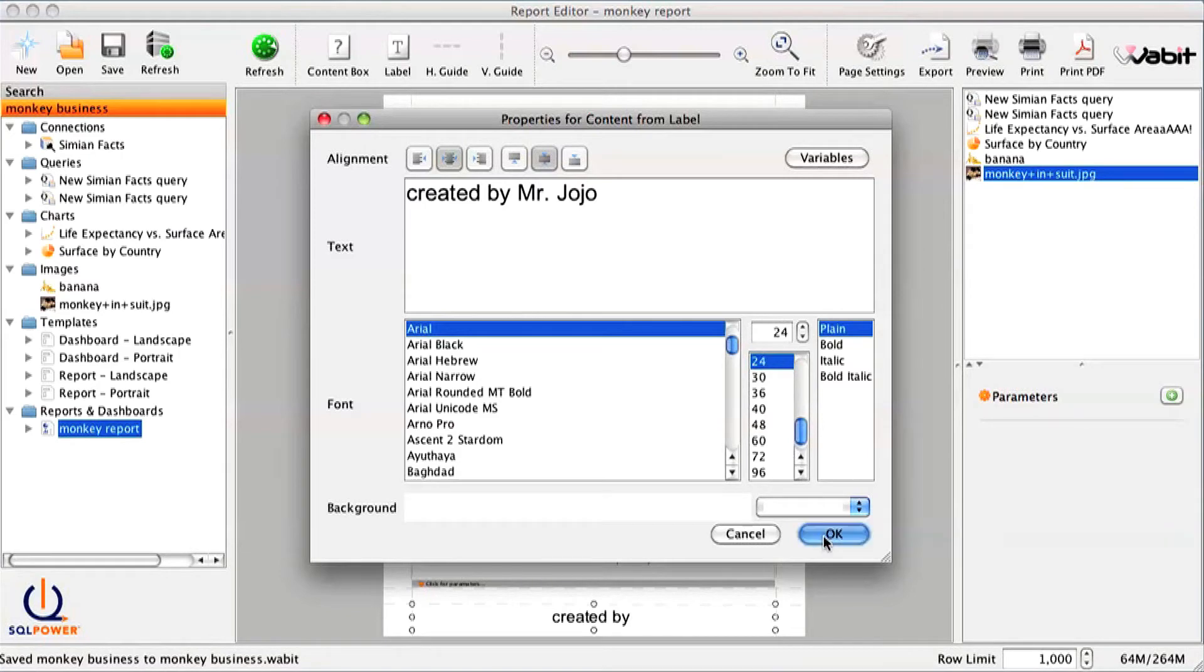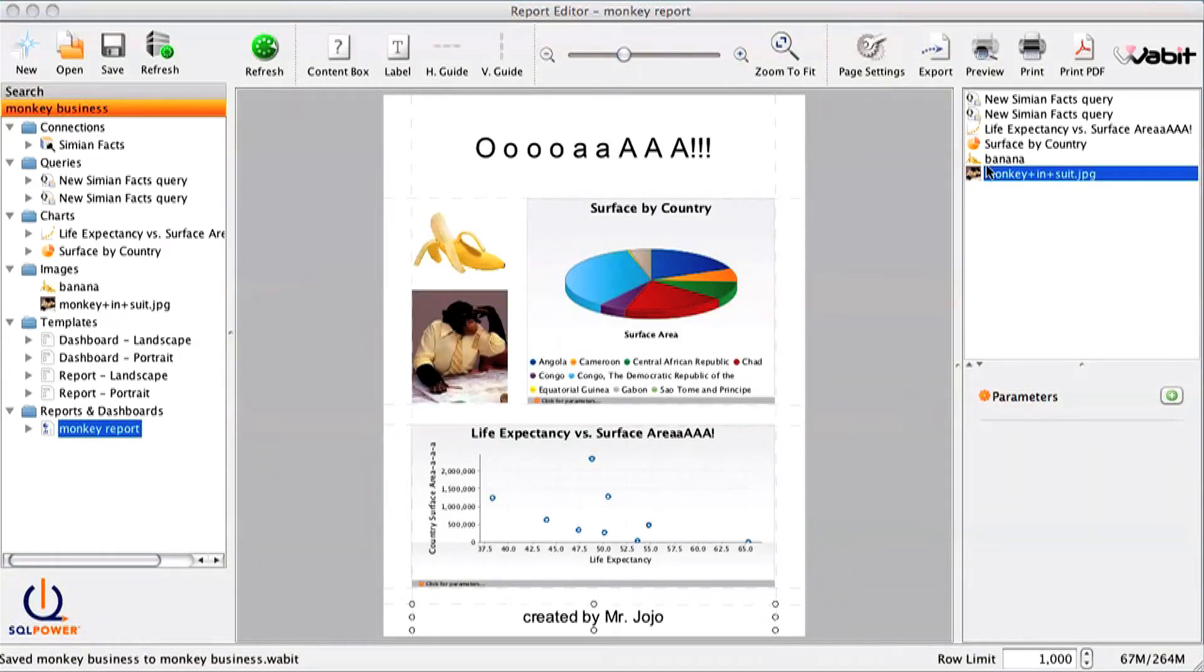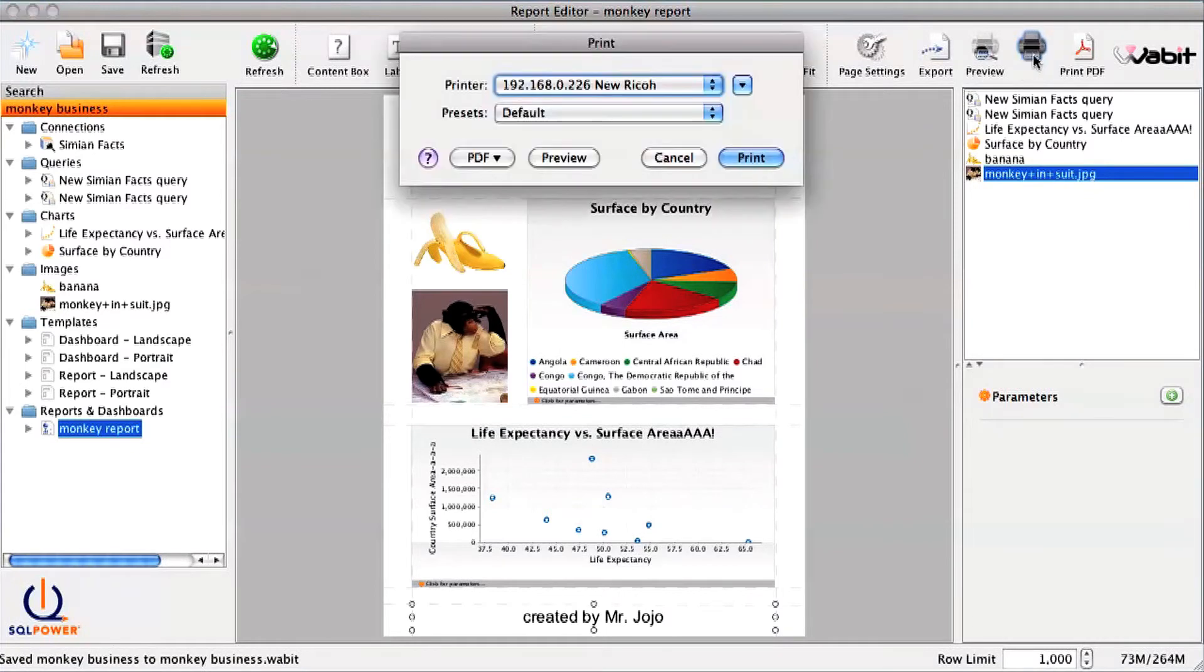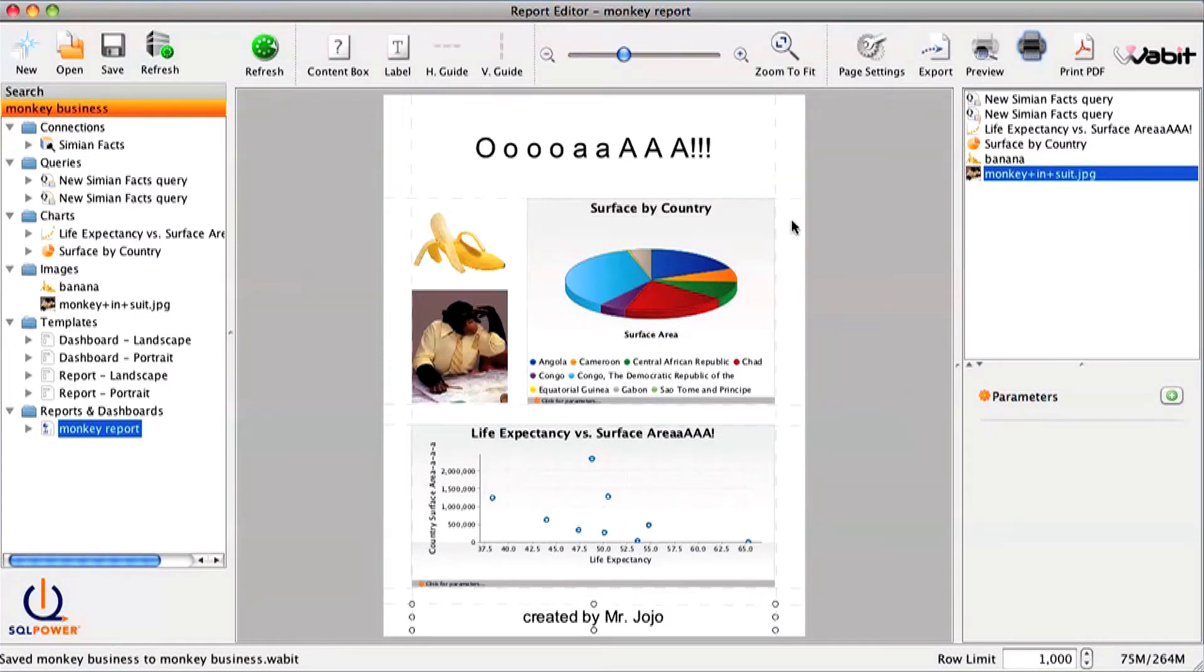All right. Thank you, Mr. Jojo. I think we're converging on a result here. Yep. That's right. They've printed a BI report. Let's see the results.